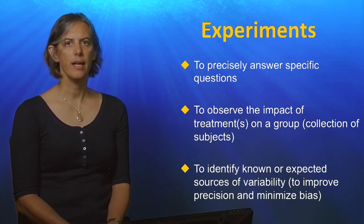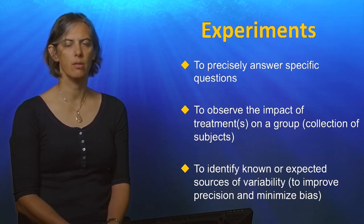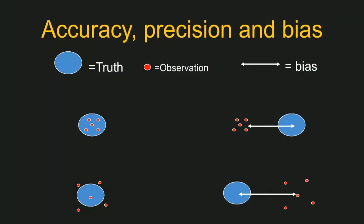Prior to engaging in any experiment, it is important to identify known or expected sources of variability, as this will improve precision and minimise bias. Professor Hergelberg spoke about precision in his field methods lecture, but it is clear that bias has to be eliminated if the answers obtained to questions are to overlap with the correct or true answers — the truth.